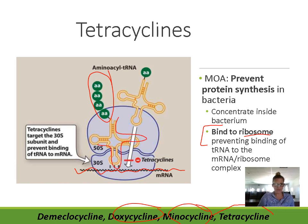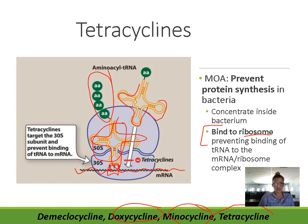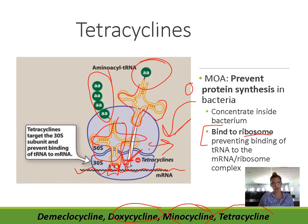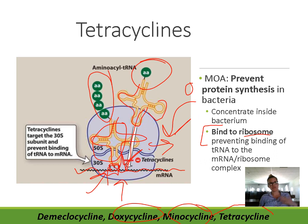tRNA carries an anticodon that matches the codon on mRNA, and each tRNA has an amino acid attached to it. A second tRNA comes and binds into the ribosome, bringing its own amino acid. The ribosome moves down the chain, another tRNA brings another amino acid, and that's how amino acids get linked together. The tetracyclines target the 30S subunit — the bottom part of the ribosome — and by binding there, the ribosome can't bind tRNA, so no new amino acids can come in and the peptide chain cannot be elongated.